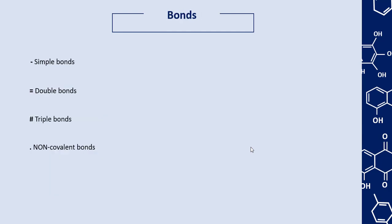So how can we represent molecular structures as SMILES? First, let's start with bonds. To represent single bonds, we can either put a hyphen between the atoms or simply skip the hyphen completely. For example, here we have a molecule of ethanol — between this carbon and this carbon we have a single bond, and between this carbon and the oxygen we also have a single bond.